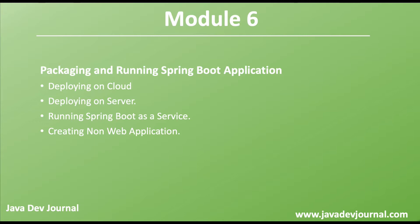Module 6 will focus mainly on packaging and running your Spring Boot application onto the production or staging environment. We'll cover the different aspects when packaging your application and the checkpoints you should take care of — for example, what checklist to follow if you want to deploy to the cloud, or what to take care of if deploying to your own infrastructure. We'll also cover running your Spring Boot application as a service, similar to how you can run Tomcat or MySQL as a service.